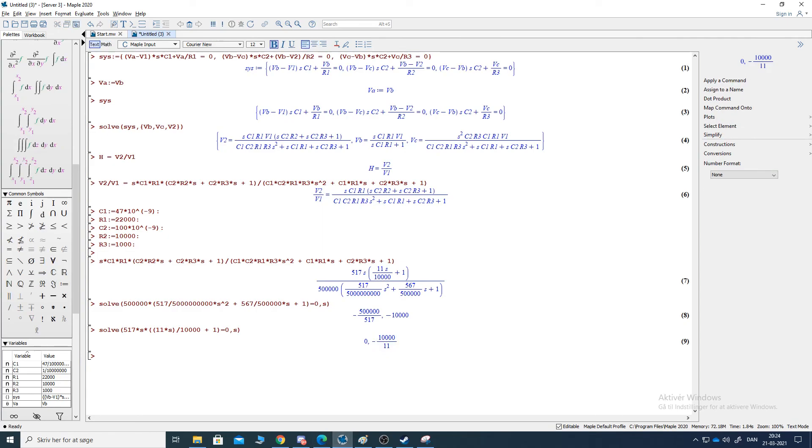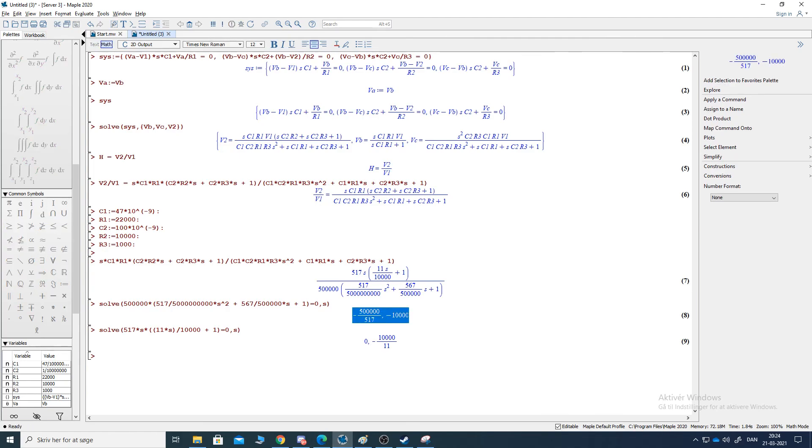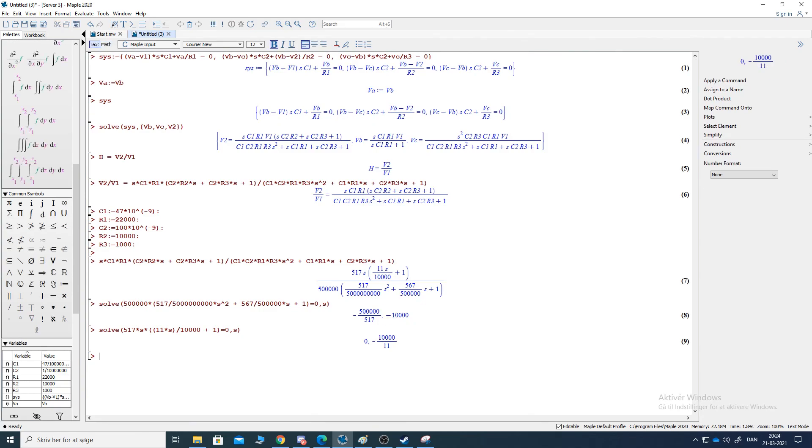That's basically it. One thing to be aware of is that I think these frequencies might be in radians per second, but if you want them in hertz, you can always just divide with two pi and then you get the frequency in hertz.